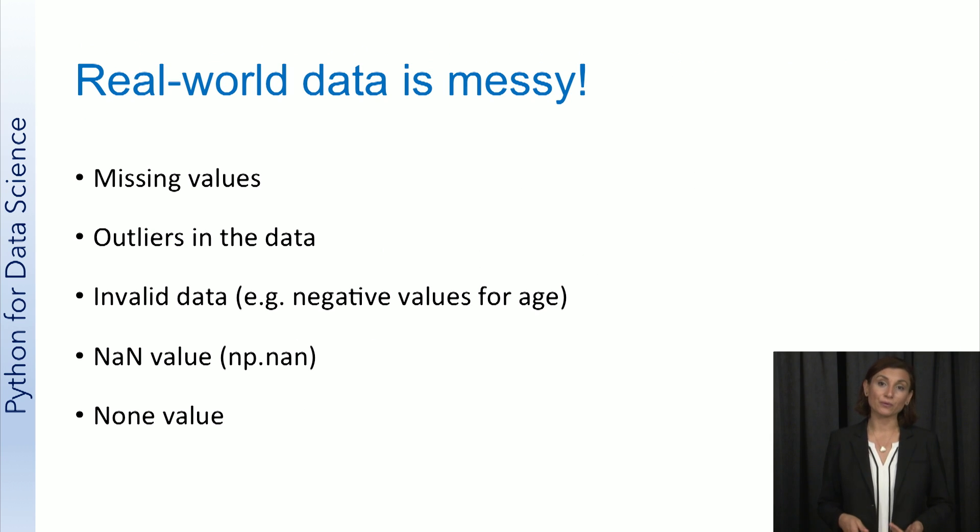As we mentioned before during our data science overview, real world data is messy. It can have problems related to missing values, outliers in the data, and invalid data, for instance, negative values for age.